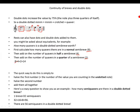The quick way to do this is simple. Take half the number, the first number equal to the number of the value you are counting in the undotted note, then half the second number, add them all together.